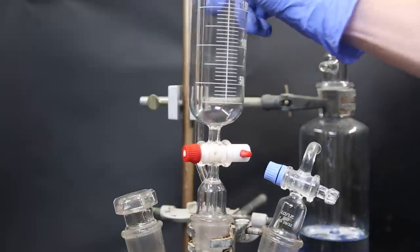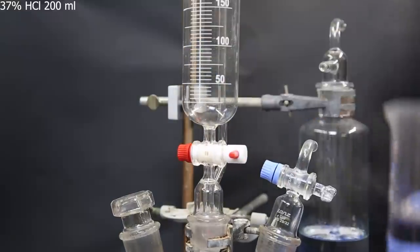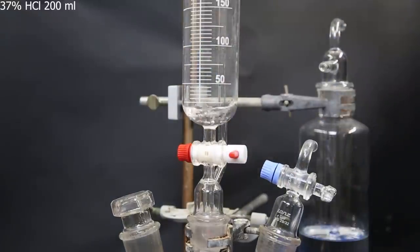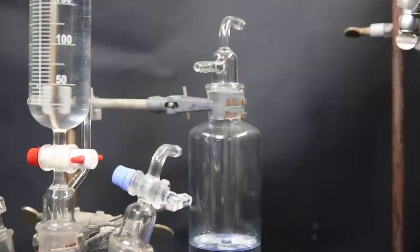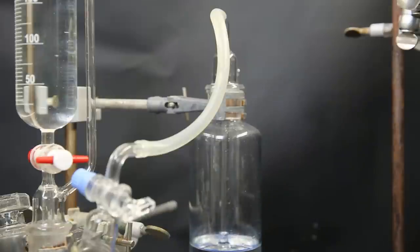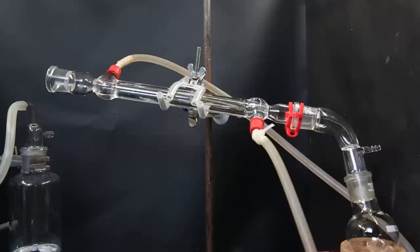Now I attach a dropping funnel on top, and pour in 200 mils with 37% hydrochloric acid. I then connect the gas adapter to the gas washing bottle. Now next to that, I set up part of a distillation apparatus with just the condenser, the curved vacuum receiver adapter, and a receiving flask. And through the condenser, I pump water that is heated to 80 degrees Celsius.